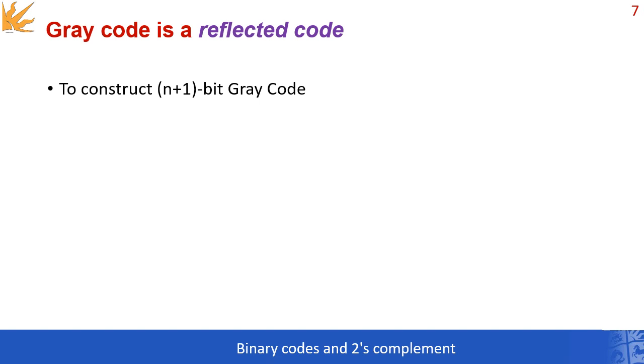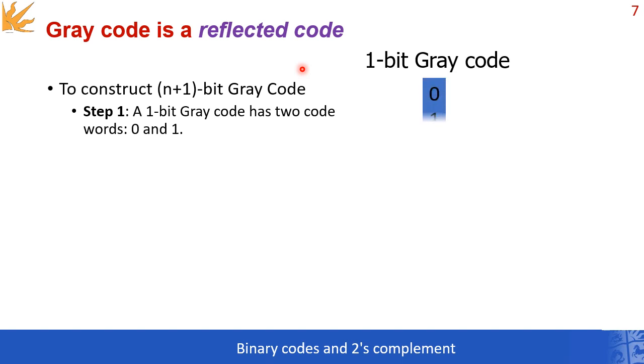Let's understand what a reflected code is in the case of a gray code based on this example. Suppose that you want to construct an n+1 bit gray code. In our example, we're going to construct a 2-bit gray code, which means that the value of n is 1. So that 1 plus 1 makes 2. The first step is to construct an n-bit gray code. In this case, a 1-bit gray code, which would look like that.